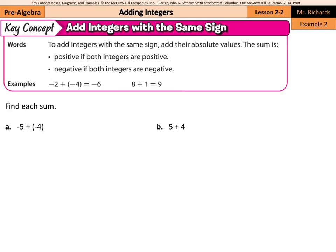A couple more examples. Negative 5 plus negative 4: both integers are negative and we're adding, so just add them up. 5 plus 4 is 9, but since both are negative, it's negative 9. And of course, 5 plus 4, example 2b, is 9.